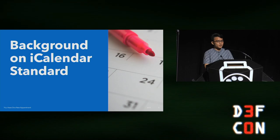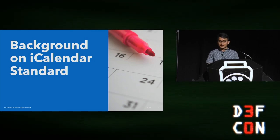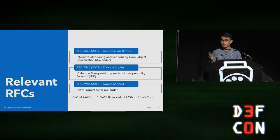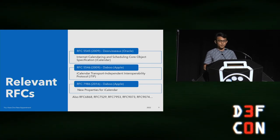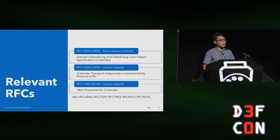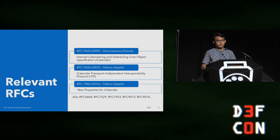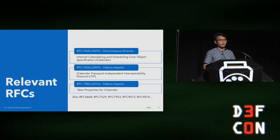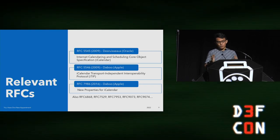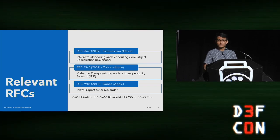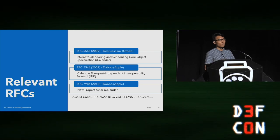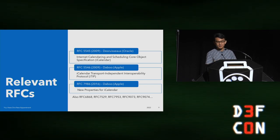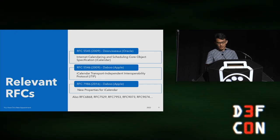RFC 2445 from 1998 was superseded by RFC 5545 in 2009, authored by someone from Oracle. More recently there have been additional updates, including from an Apple engineer, along with other RFCs extending interoperability. When you think about the iCalendar format, RFC 5545 is the core specification. So what does a calendar invite actually look like? You get an email with an ICS attachment.